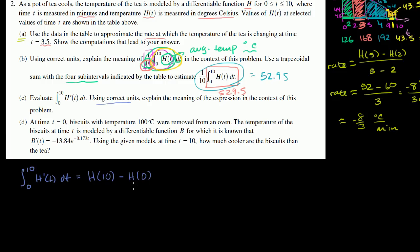When you look at it this way, you see that evaluating it just gives us the difference in temperature from 0 minutes to 10 minutes. We're taking the temperature at 10 minutes and subtracting from that the temperature at 0 minutes. So this is really our change in temperature over those 10 minutes.